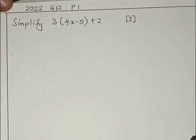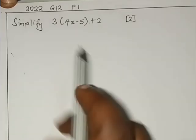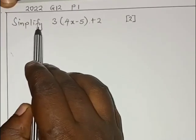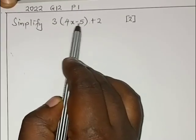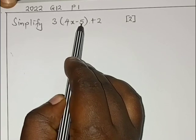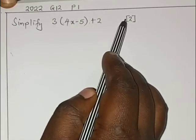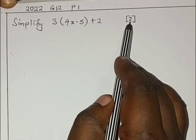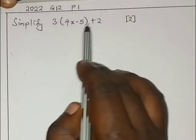Hello friends, let's look at this question coming from 2022 grade 12 paper 1 mathematics. The question reads simplify 3 in brackets we have 4x minus 5 then plus 2. The number of marks that were allocated was two.